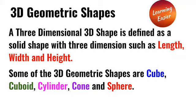Some of the 3D geometric shapes are cube, cuboid, cylinder, cone, and sphere.